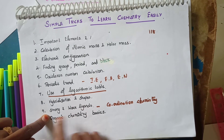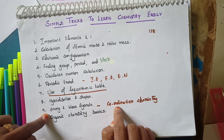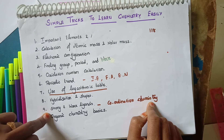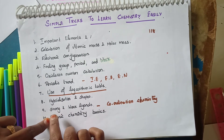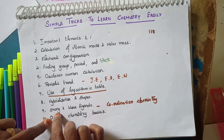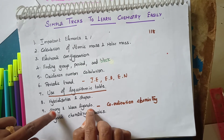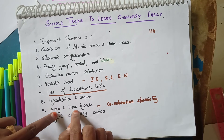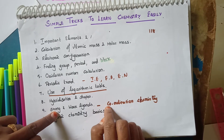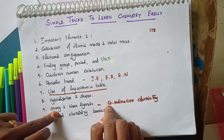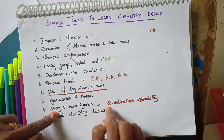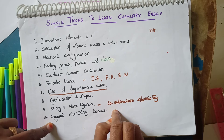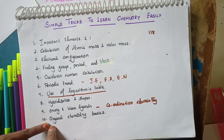The next basic is strong and weak ligands. This topic is especially for coordination compounds and coordination chemistry. You should know which ligands are considered strong and which are weak, because only then can you study high spin and low spin complexes and easily identify them.